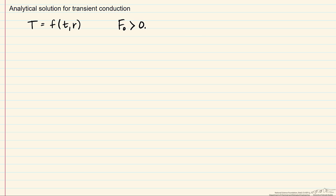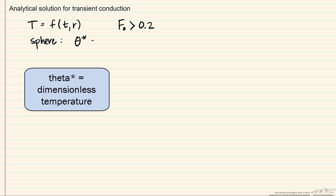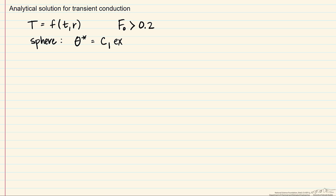So the approximate analytical solution now for a sphere is equal to theta star equals C1, which is a constant, then the exponential of now an eigenvalue 1 squared times this Fourier number, which I mentioned before, 1 divided by, again, this eigenvalue, times R star, which is equal to a dimensionless radius, and then times the sine, again, of this eigenvalue number 1 times R star.